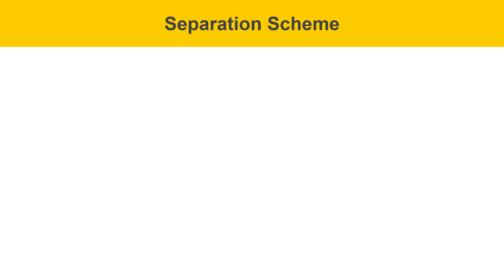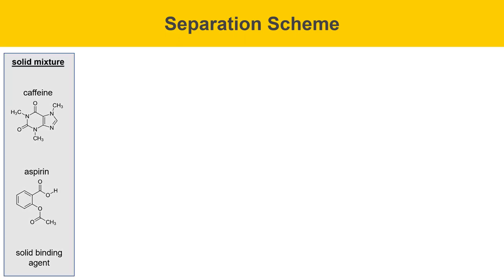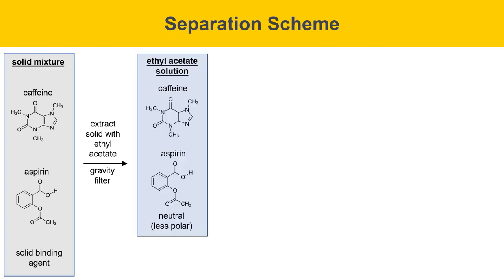Here's the separation scheme that takes advantage of that acid-base-dependent solubility behavior. We start with a mixture of caffeine, aspirin, and the solid binding agent present in Anacin tablets, which we grind up. We extract this solid mixture with ethyl acetate — a medium-polarity solvent that is a good match for caffeine and aspirin but doesn't dissolve the solid binding agent. We then gravity filter off the solid binding agent, leaving an ethyl acetate solution containing neutral caffeine and neutral aspirin, with the solid binding agent caught in filter paper.